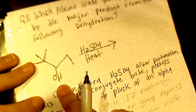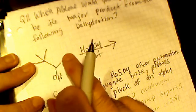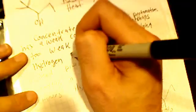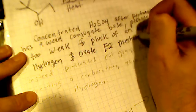So this is the alcohol that it protonates. An alpha hydrogen would be this hydrogen next door, a next door hydrogen. It's too weak to pluck off an alpha hydrogen and create an E2 mechanism. So that's why it's not E2.